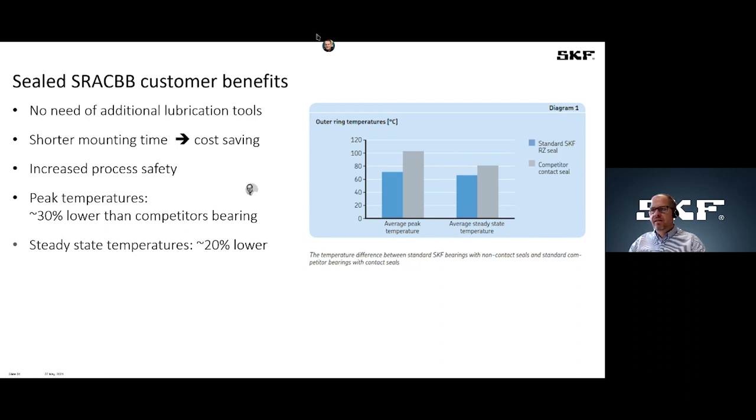If you have such a sealed angular contact ball bearing, you can eliminate external seals for instance, or additional lubrication tools. And this leads at the end to compact design and also to cost saving. As the bearings are sealed, then you have increased the process safety during handling, during mounting, and also during the operation of the bearing.